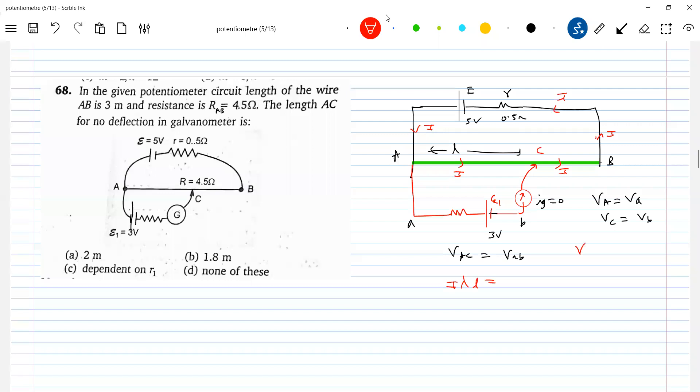Vab should be equal to 3 volt. This should be equal to 3.